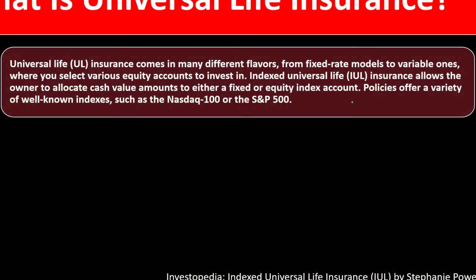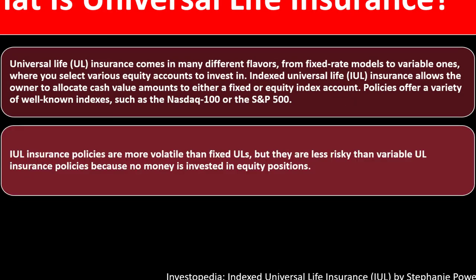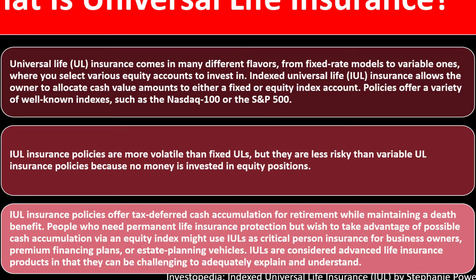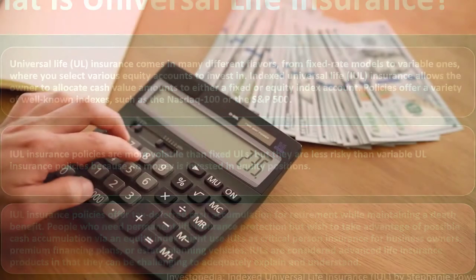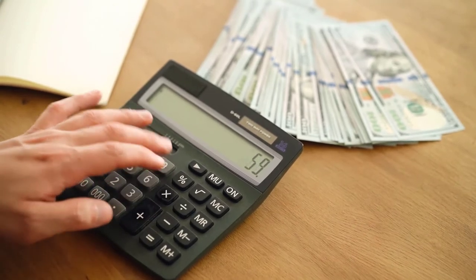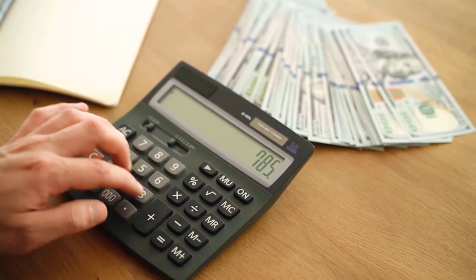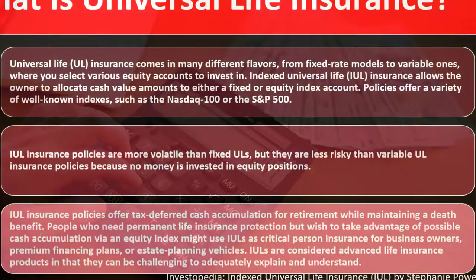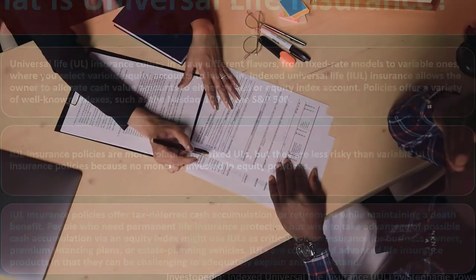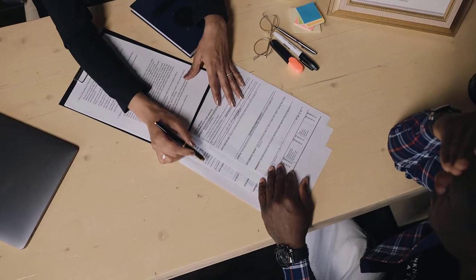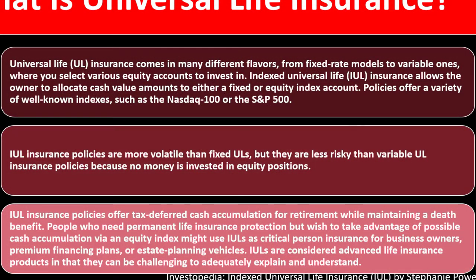Policies offer a variety of well-known indexes such as the NASDAQ 100 and the S&P 500. IUL insurance policies are more volatile than fixed ULs but less risky than variable UL insurance policies because no money is invested in equity positions. IUL insurance policies offer tax deferred accumulation for retirement while maintaining a death benefit. You've got the investment component which could have tax benefit components, but you would want to be asking why wouldn't I buy the cheaper term policy and invest the difference in an IRA or 401k plan where I could have tax benefits as well.